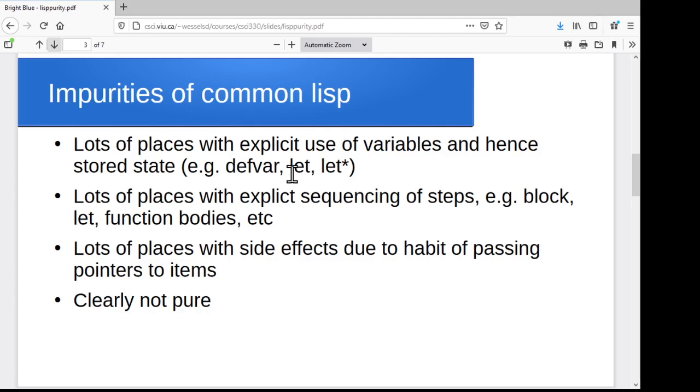There are a ton of different places where we allow explicit use of variables. So things like def vars and lets and the implicit set fs and let stars and all of the different dos and with open file type of thing where we have a bunch of implicit local variables. All of this has stored state associated with it.